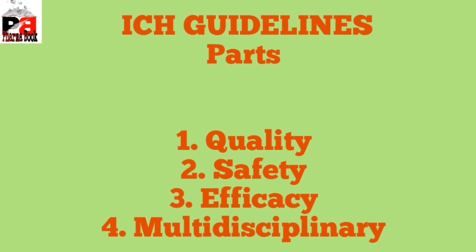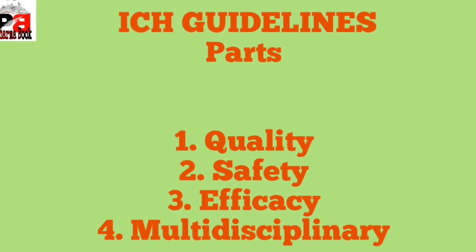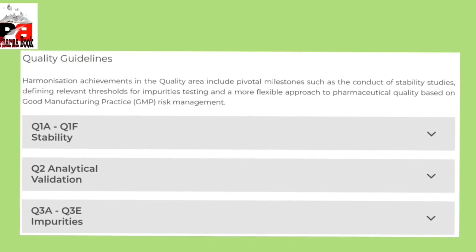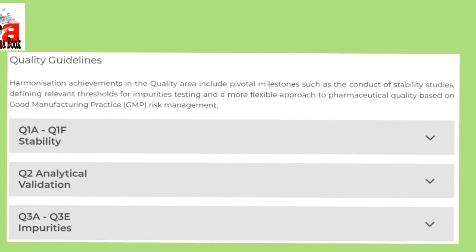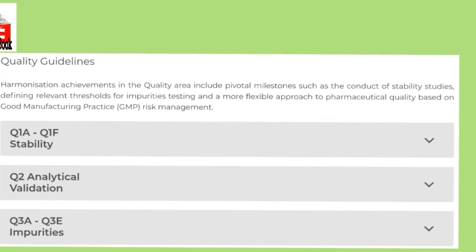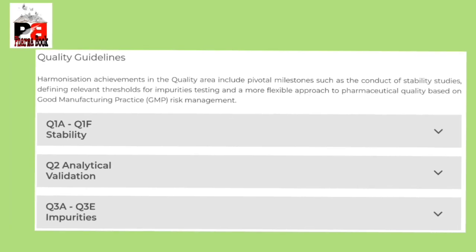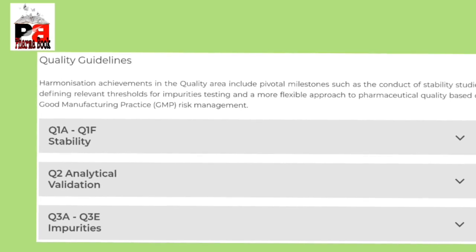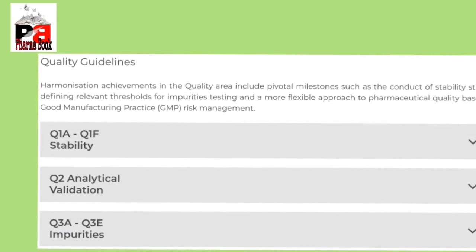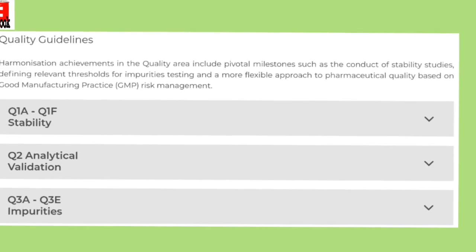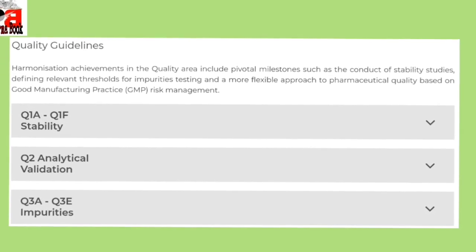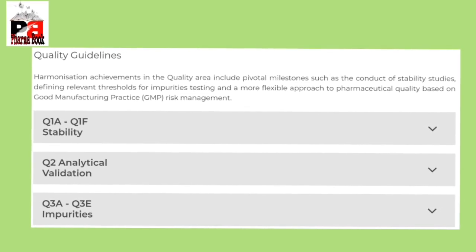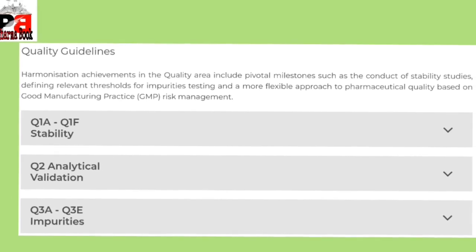As discussed, the ICH guidelines parts are Quality, Safety, Efficacy, and Multidisciplinary. Harmonization of quality guidelines is mainly to approach pharmaceutical quality based on good manufacturing practices and risk management. Quality guidelines are categorized from Q1 to Q14, where Q means Quality. A few of the quality guidelines are subcategorized, but in this video we will not discuss the subcategorized guidelines.